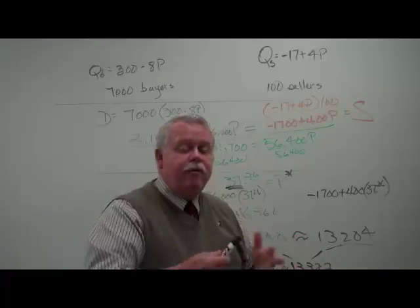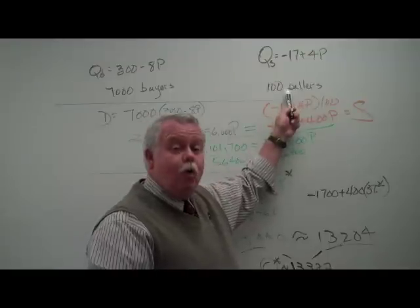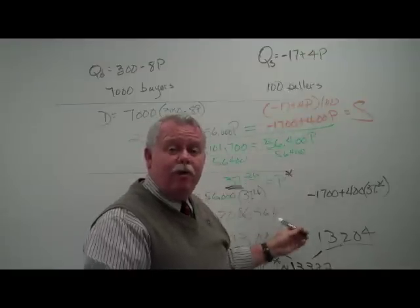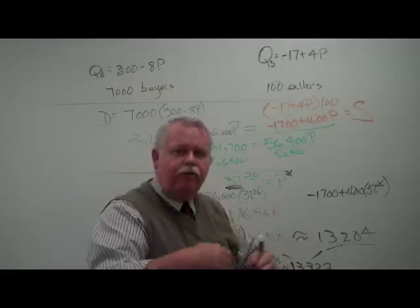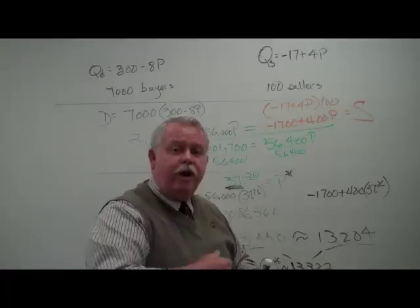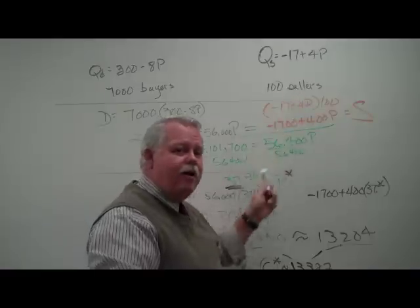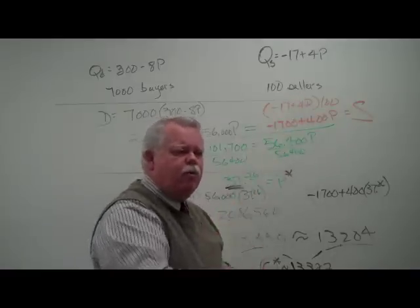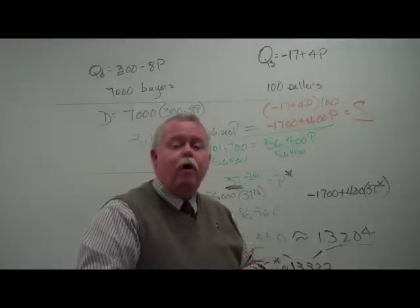We can change the numbers repeatedly. Then we can ask other questions. What happens if four more sellers come into the market? What will happen to the market price? We know conceptually more sellers would increase the supply curve, which would reduce the price and increase the equilibrium quantity. In fact, if we plug in 104 up here and recalculate the math, we come up with pretty close what the equilibrium price and quantity would be.